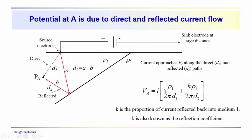So now we have two terms. We have the direct current flow, which gives us current times the resistivity in the first medium over 2π D1, which would be the length of this path, plus k, the amount reflected back along this reflection path. Again, we're in medium 1, so we use ρ1, but we have 2π and then D2, which is our A plus B, is the length of this reflection path. So k is the proportion of the current that's reflected back into medium 1. It's also known as the reflection coefficient.